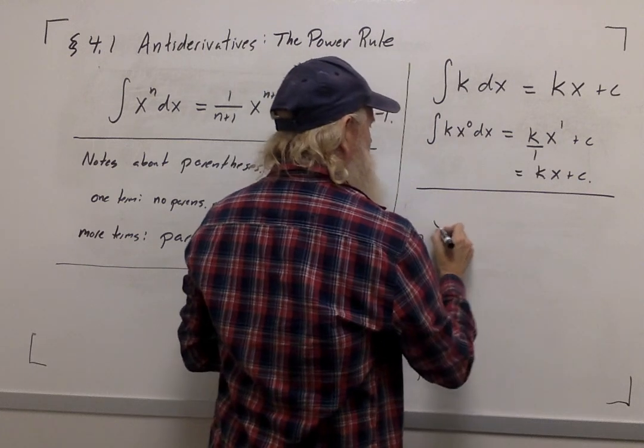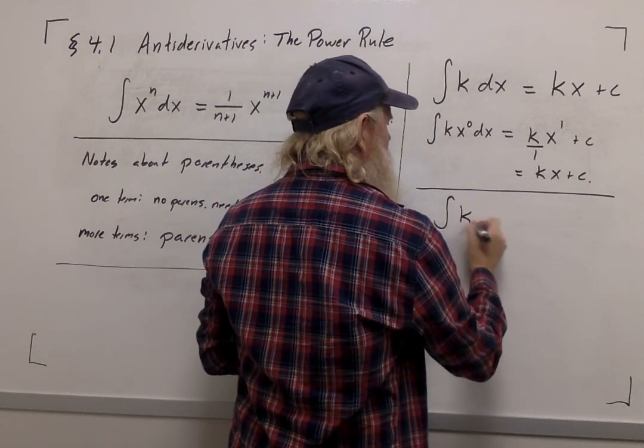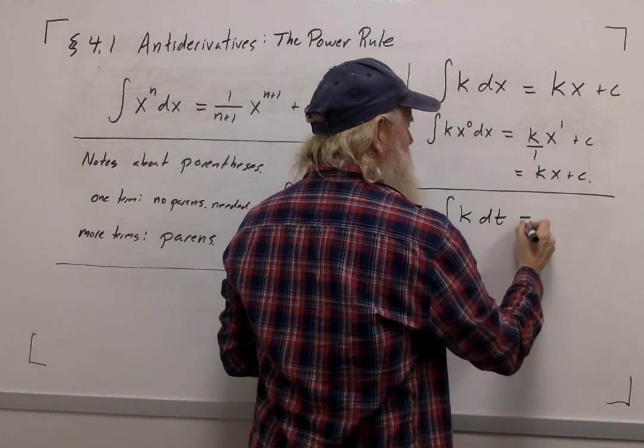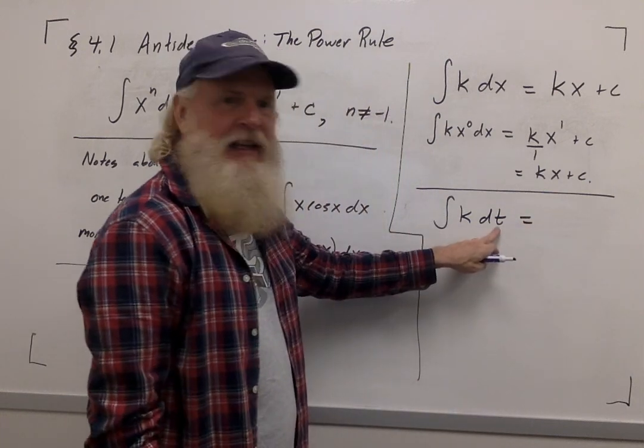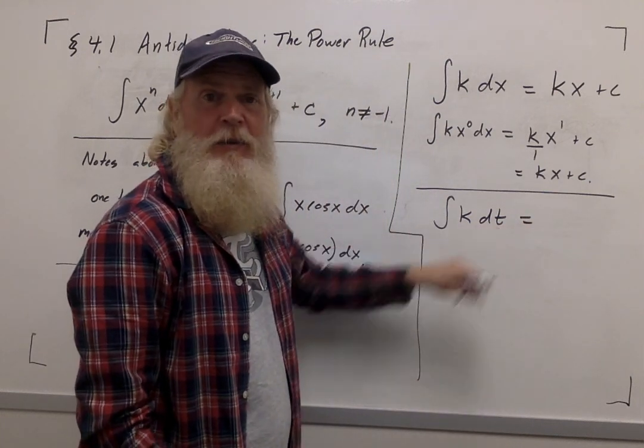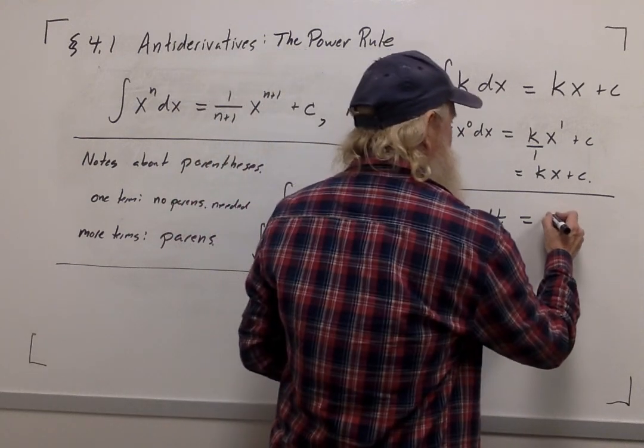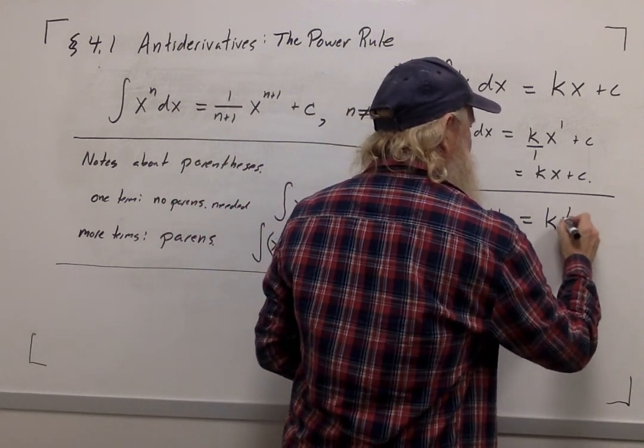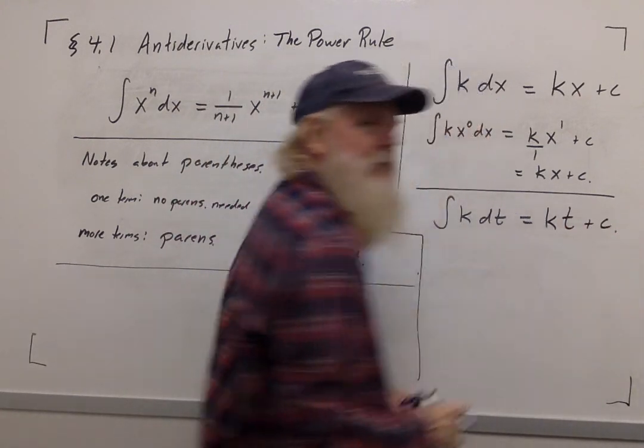Notice, however, if I wrote this anti-derivative, the anti-derivative of k dt, then the dt is indicating that my independent variable is t, and the answer instead will be kt plus c.